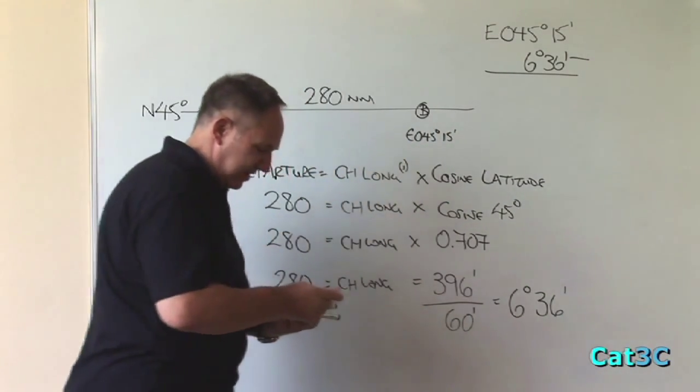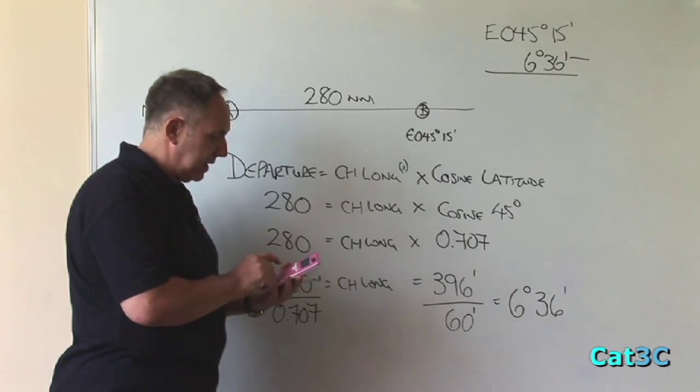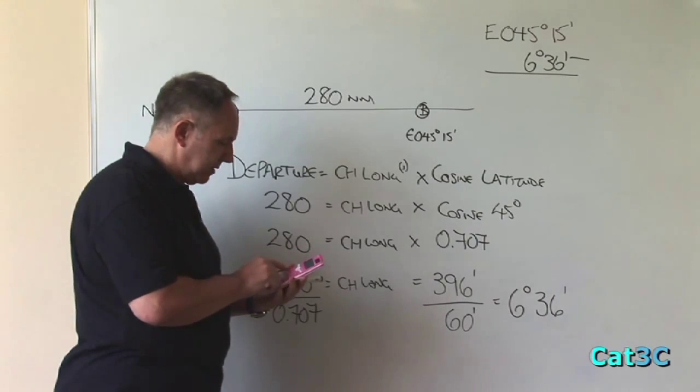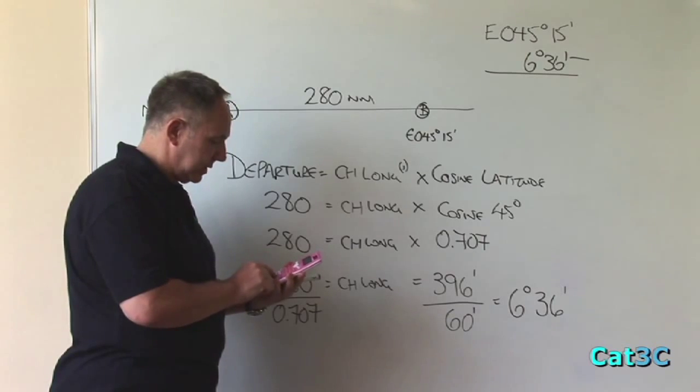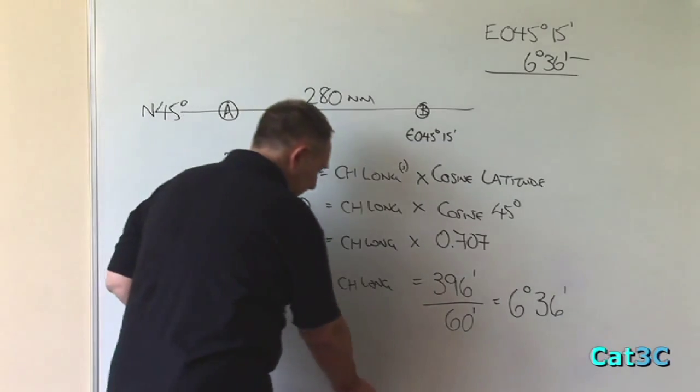And on the calculator, if I enter 45 DMS button, 15 DMS button, minus 6 DMS button, 36 DMS button equals 38 degrees and 39 minutes.